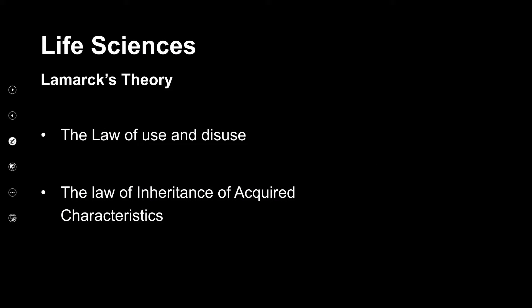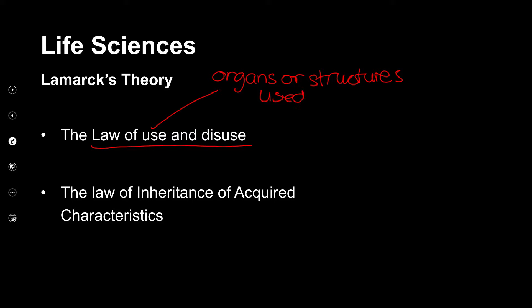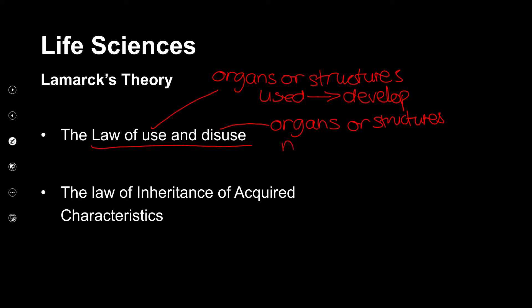His two laws: the first is the law of use and disuse. He believed that if organs or structures were used, they would grow, develop, and become stronger, longer, or bigger, and then be passed on to offspring. For the disuse part, he believed that when organs or structures were not used by an organism, they disappeared.